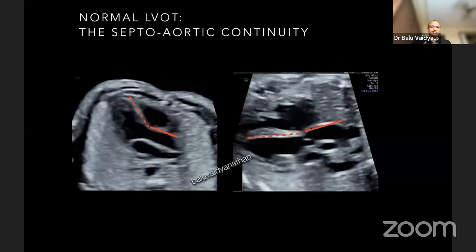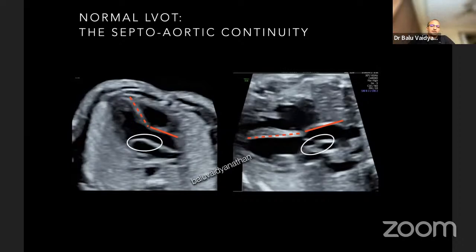This is an extremely important concept in the fetal heart. If you do not have this septo-aortic continuity, then you have an important group of conditions. There could also be a similar kind of continuity between the aorta and the mitral valve, called aorto-mitral continuity, which we do not discuss as much in the fetal heart compared to the septo-aortic continuity.